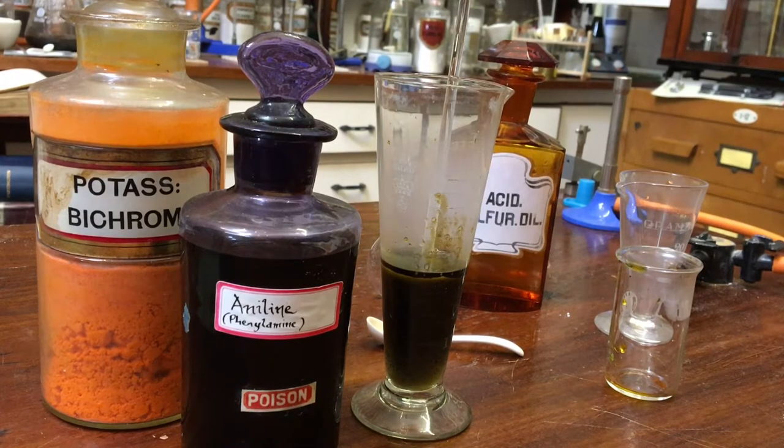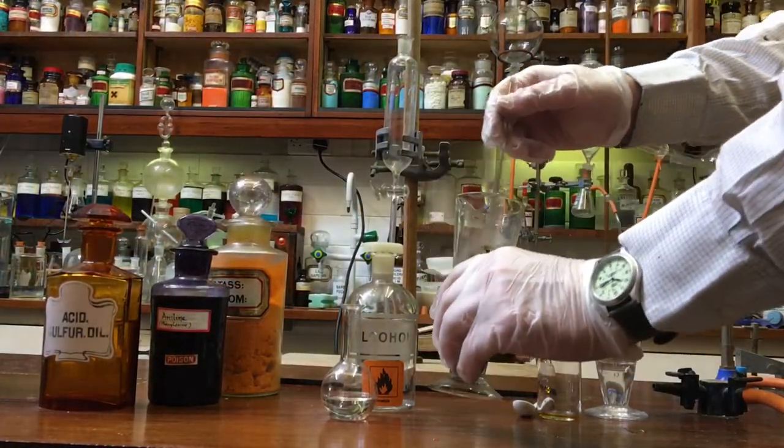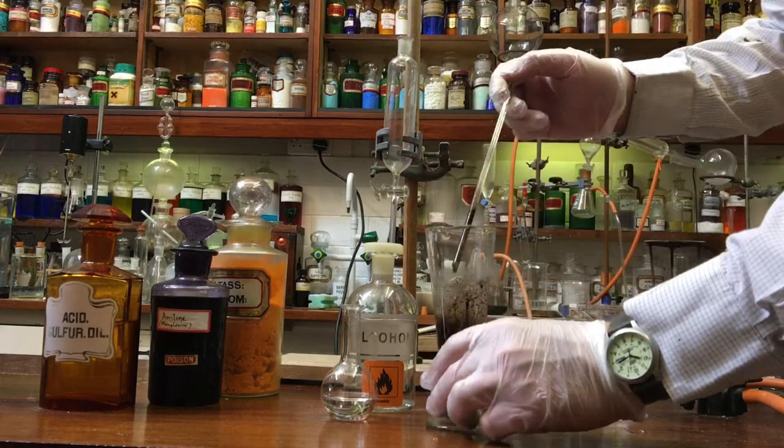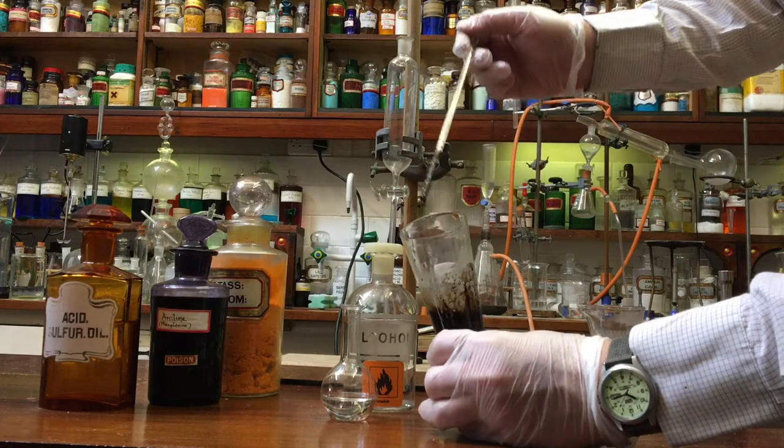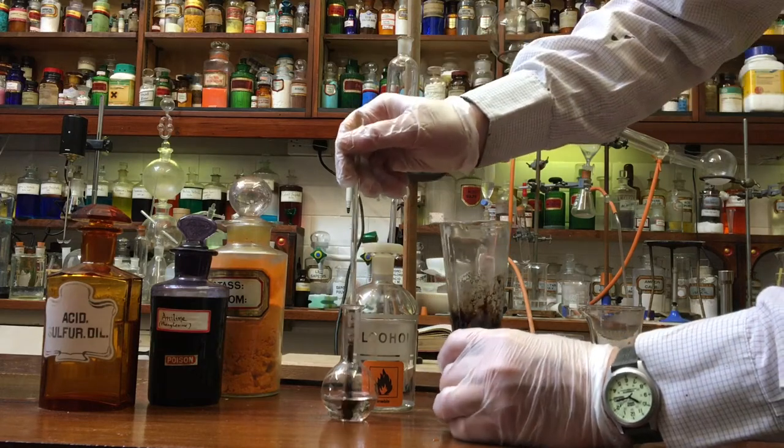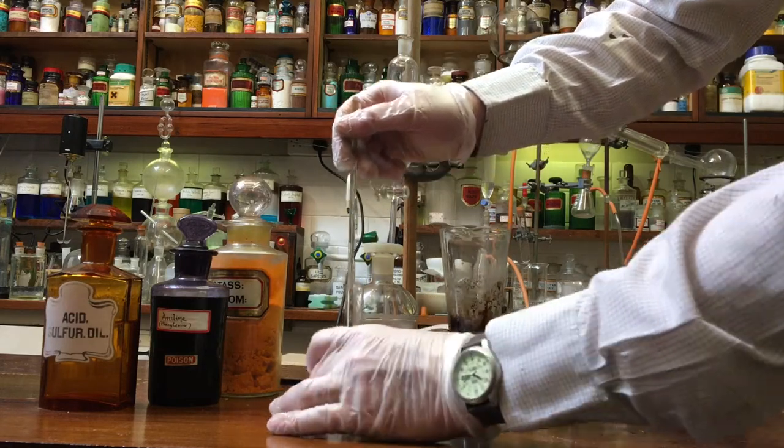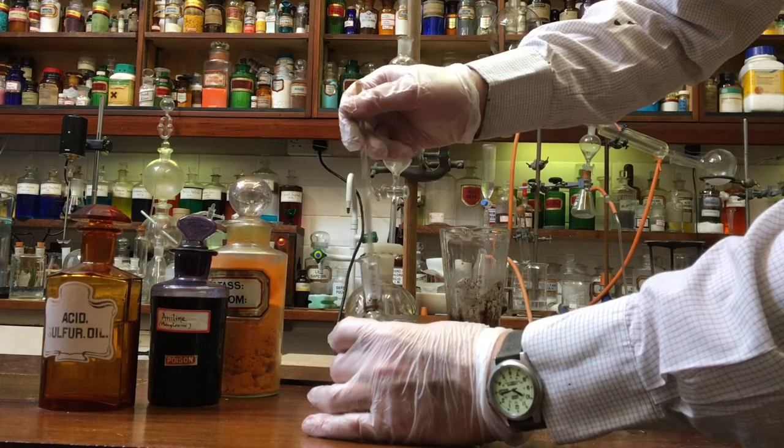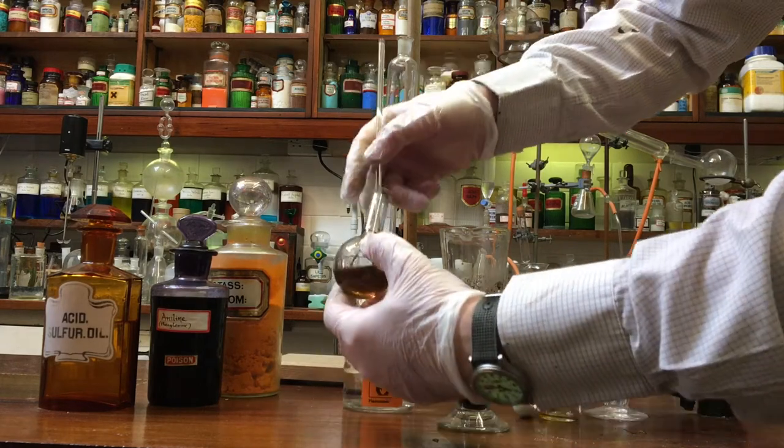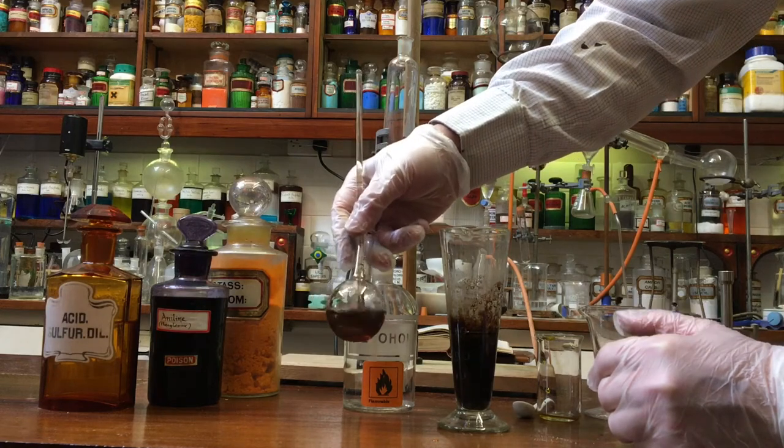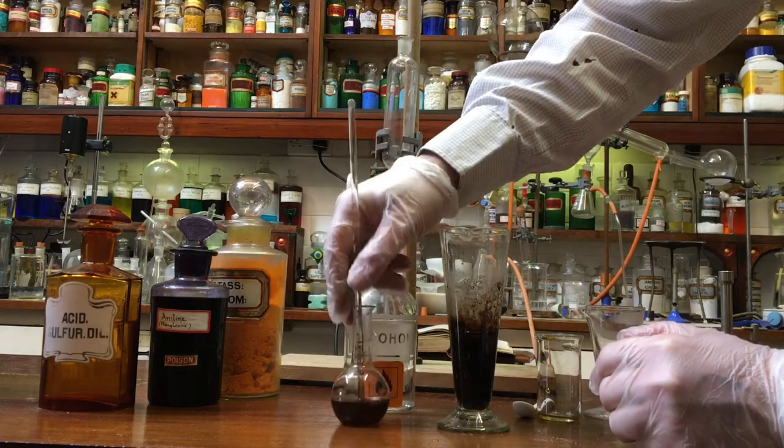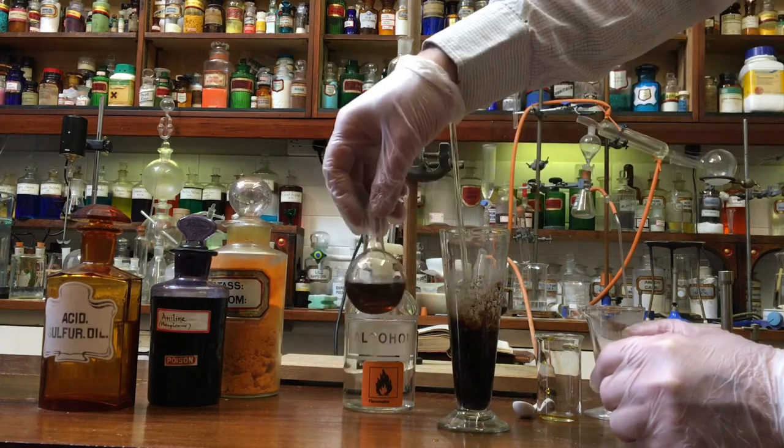So I'm going to try and see whether we can extract this as Perkin did using some naphtha, and we're going to put some into some alcohol because that's how he accidentally discovered it. He left the horrible black precipitate for about 12 hours and then came back to it to try and rinse out the flask with some alcohol and he produced this beautiful purple dye.